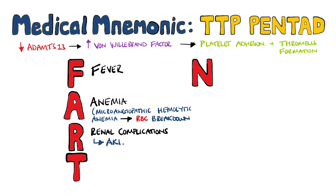Previously, physicians would use the presence of kidney involvement to suggest that the form of microangiopathic thrombocytopenia was due to hemolytic uremic syndrome, but recent studies have shown that AKI is actually underestimated in TTP patients. The main mechanism behind the kidney injury is thrombotic microangiopathy.